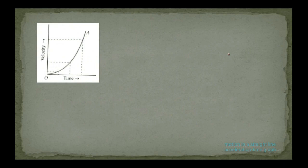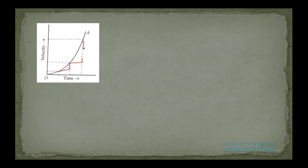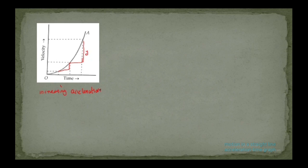Now let's discuss the top-opening parabola graph. The slope of this graph is increasing. Since the slope of a velocity-time graph equals acceleration, an increasing slope means increasing acceleration. This graph represents increasing acceleration — there is a greater change in velocity, and the curve bends upward.